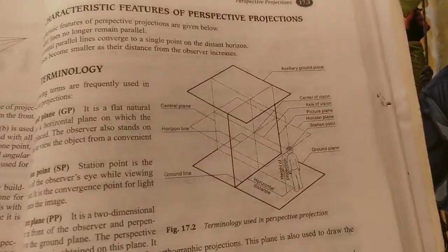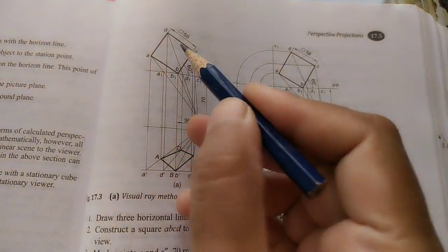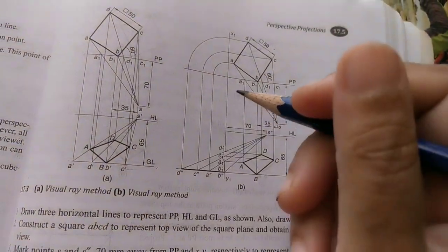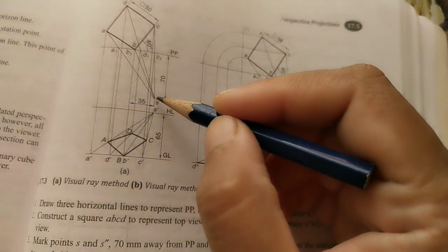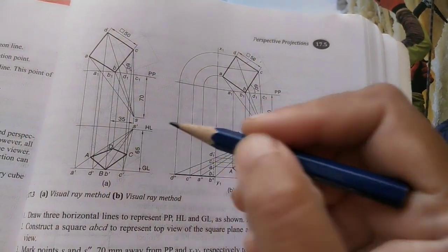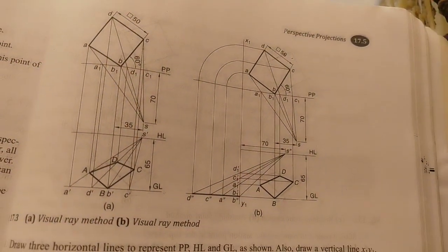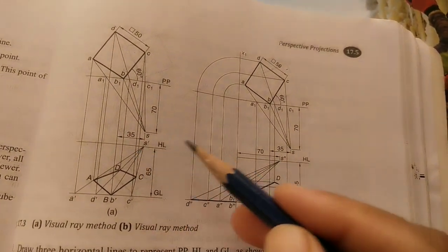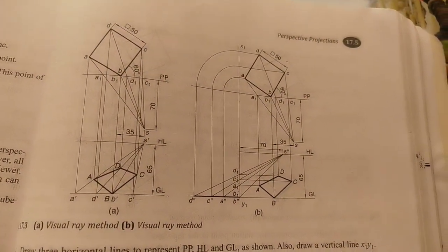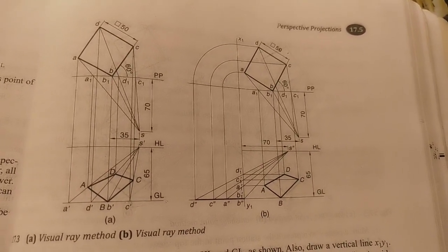After the ground line (GL), we take the horizontal line (HL), which is on the horizontal plane. After GL we take HL. Then we take the picture plane — which is the vertical plane. Above the picture plane the top view is drawn, and below the HL the front view is drawn. S is the station point in the top view and H-dash is the station point in the front view. All dimensions are given in the question. These are the important lines — GL, HL, and PP — used in perspective projections.